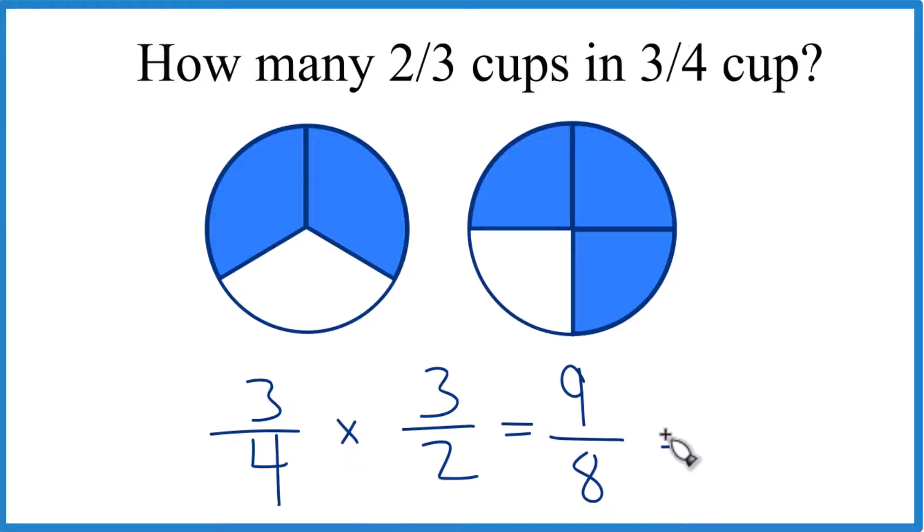Let's convert that to a mixed number. So eight goes into nine one time. So one times eight, that's eight with one left over. Bring the eight across here. So nine-eighths, that equals one and one-eighth.